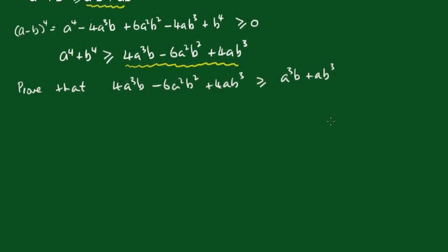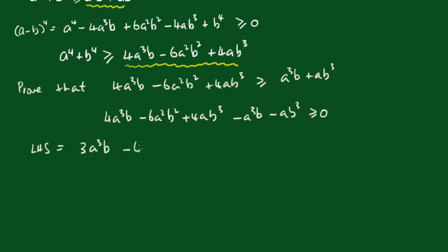What we'll do here is take this across the other side. So 4a^3*b - 6a^2*b^2 + 4ab^3 - a^3*b - ab^3 ≥ 0. If we can prove this result, then we've proved the inequality is true. The left hand side equals 3a^3*b - 6a^2*b^2 + 3ab^3.